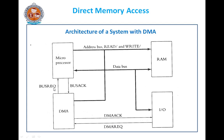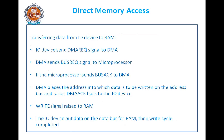The microprocessor releases the bus acknowledgement and continues executing its own instructions. The I/O device sends the DMA request signal first to the DMA, then the DMA sends bus request to the microprocessor, and the microprocessor sends bus acknowledgement to the DMA. The DMA places the address and raises the DMA acknowledgement back to the I/O device. The write signal is raised to the RAM, and the I/O device puts the data on the data bus. Then the write cycle is completed.